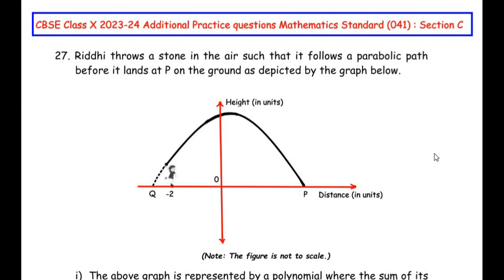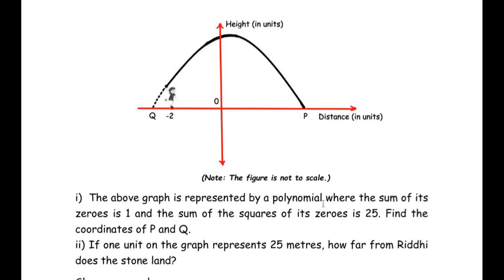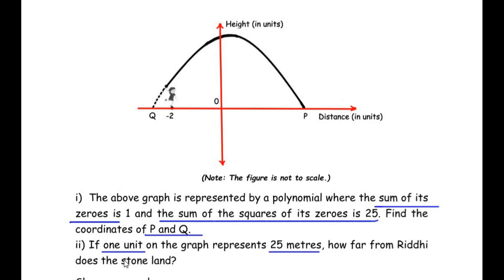Hello and welcome to my channel. In this video we are going to solve the 27th question from CBC class 10 2023-24 additional practice questions from Mathematics Standard with subject code 041, Section C. This question is from the Polynomials chapter. Rithi throws a stone in the air such that it follows a parabolic path before it lands at point P on the ground as depicted on the graph. The polynomial representing this graph has sum of its zeros equal to 1 and sum of the squares of its zeros equal to 25. Find the coordinates of P and Q. The second sub-question is: if one unit on the graph represents 25 meters, how far from Rithi does the stone land?